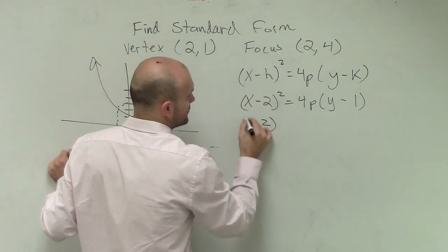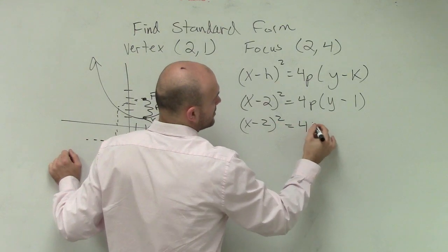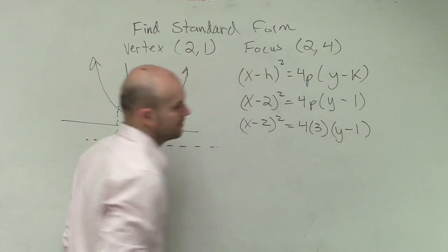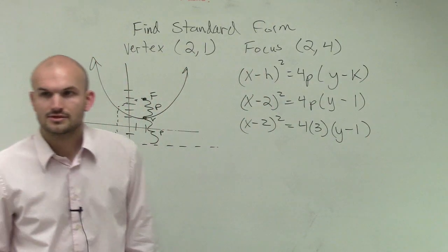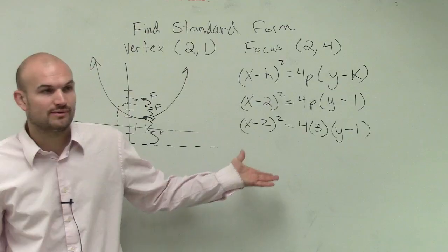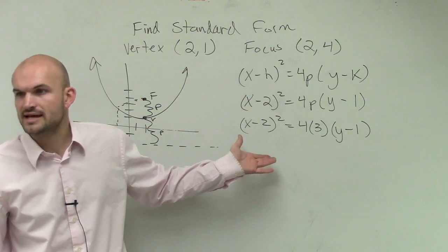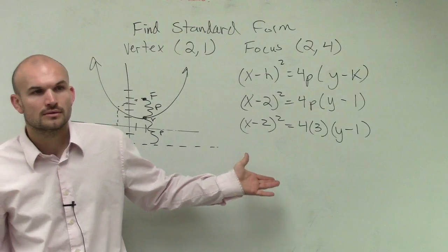So we'd have (x - 2)² = 4(3)(y - 1). So this is going back to our standard form. But could we write this back into a standard equation, standard form that we've done before?